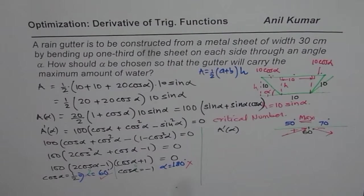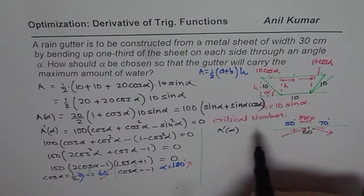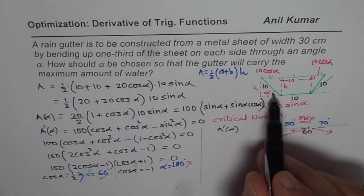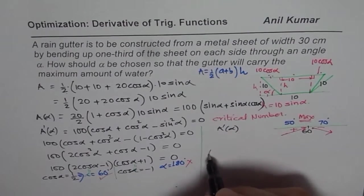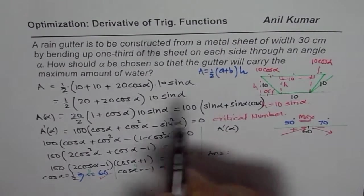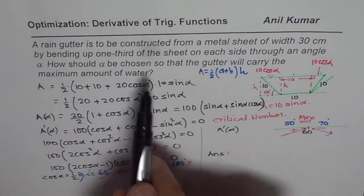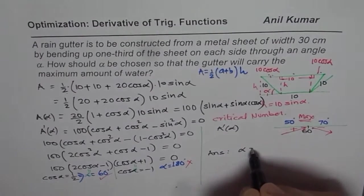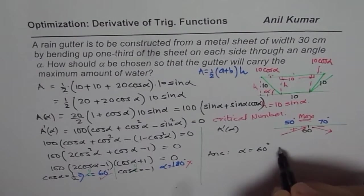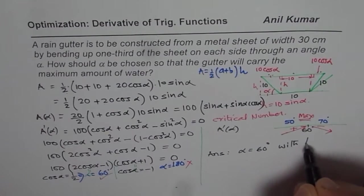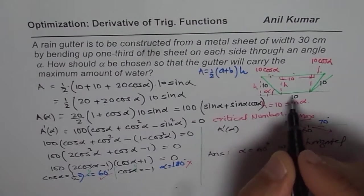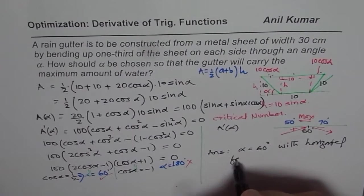So that is how we can find the solution and confirm that this is indeed maximum for the angle of 60 degrees. The question is how should alpha be chosen so that the gutter will carry maximum amount of water. So alpha should be equal to 60 degrees with horizontal for maximum capacity.